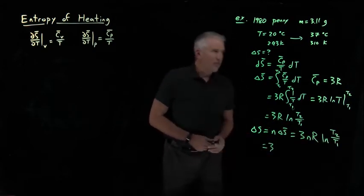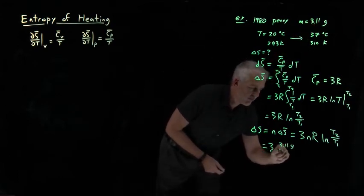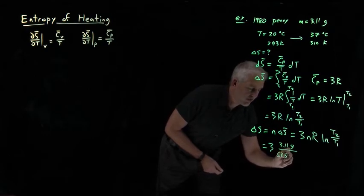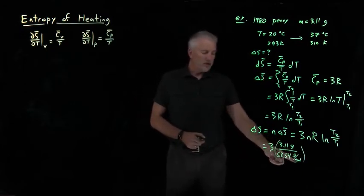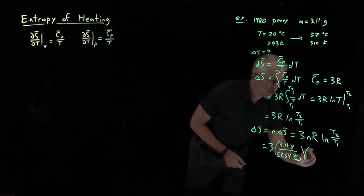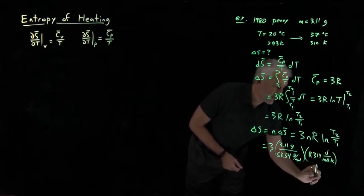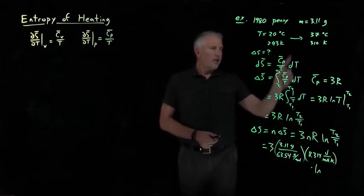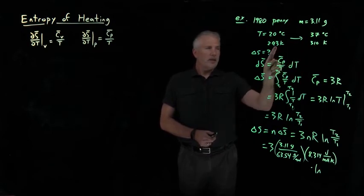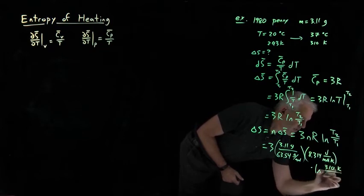3 times the number of moles, 3.11 grams, is if I divide by the molar mass of copper. That will give me the number of moles. Grams will cancel, leaving me with just moles on top. Multiply by the gas constant, 8.314 joules per mole Kelvin. I need to also multiply by the natural log of this ratio of the temperatures. Final temperature is 310 in Kelvin. Initial temperature is 293. So 310 Kelvin divided by 293 Kelvin.